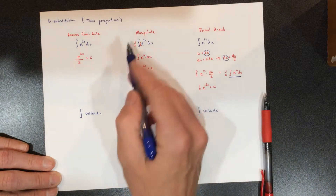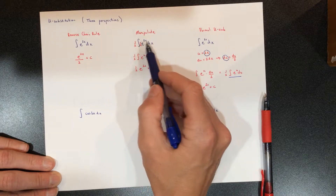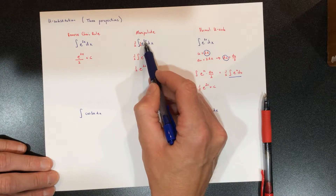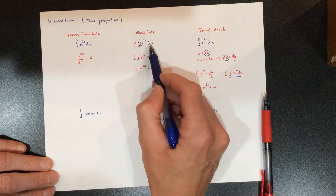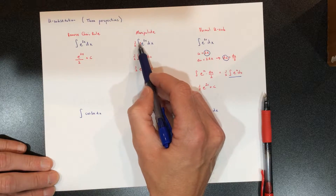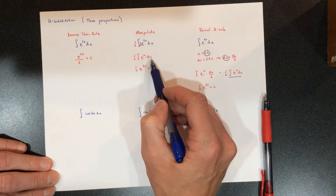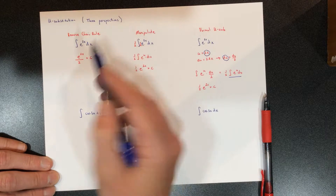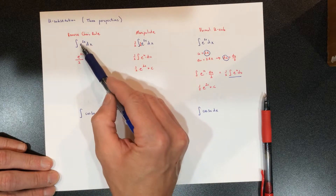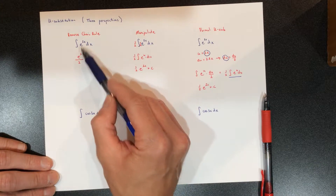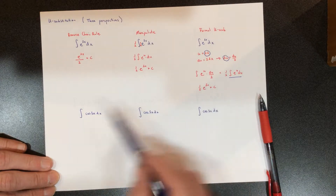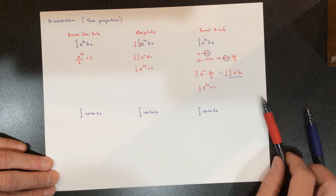Of course I'm going to get the same answer — it's the same integral. You could manipulate from the very get-go: you know you're going to make that u, you need a du, you need a 2 there, so multiply by 2, multiply by half, and roll. Or for the easiest cases, just use the reverse chain rule — of course when taking the antiderivative you're going to divide by 2. Same thing every time.